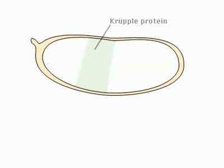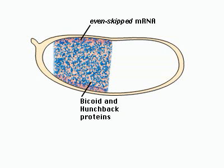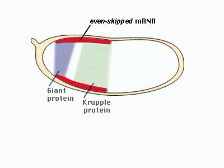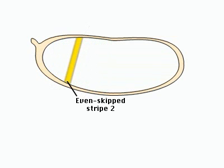Bicoid, Hunchback, Krüppel, and a fourth protein, Giant, control expression of even-skipped stripe 2. Bicoid and Hunchback activate transcription of the even-skipped gene in a broad band, while Giant and Krüppel repress its transcription at sharp anterior and posterior boundaries. This generates a precise stripe of even-skipped protein.